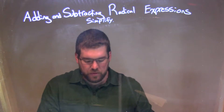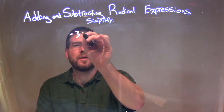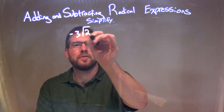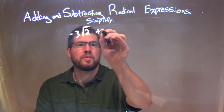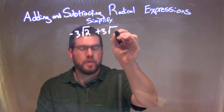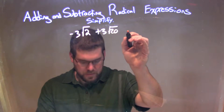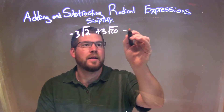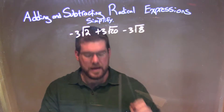So if I was given this expression: negative 3 times the square root of 2, plus 3 times the square root of 20, minus 3 times the square root of 8.